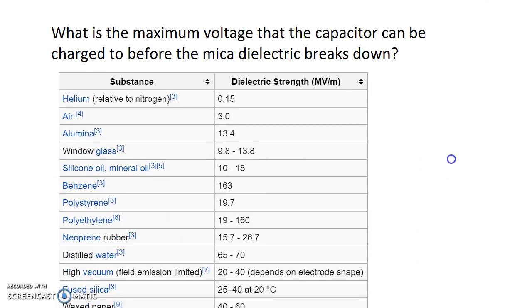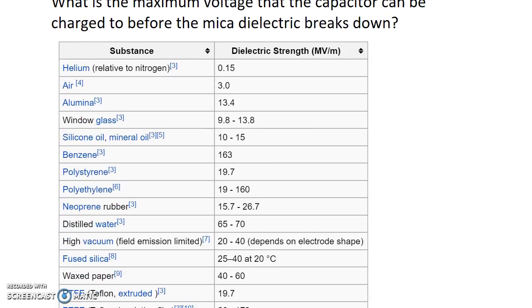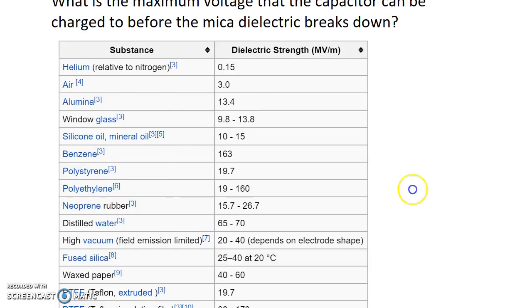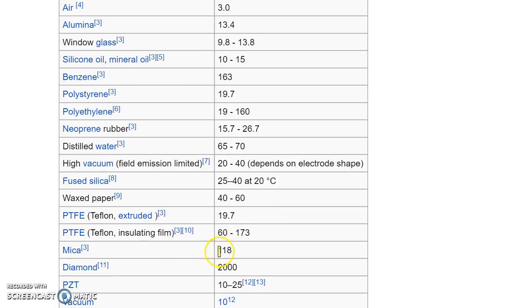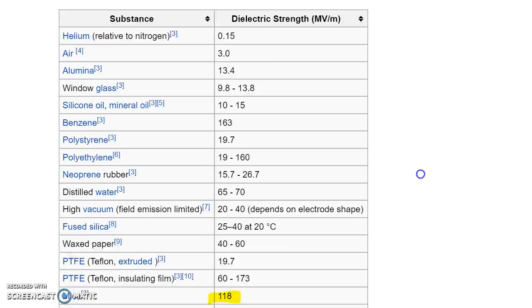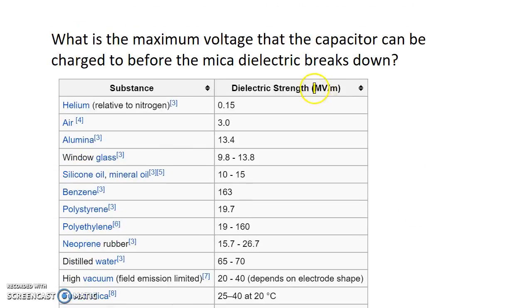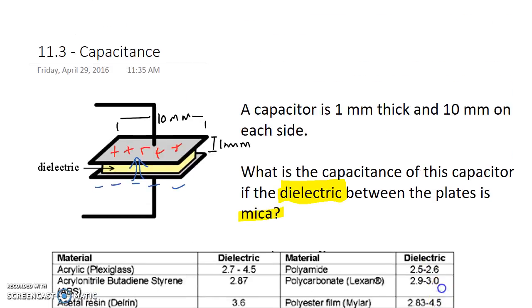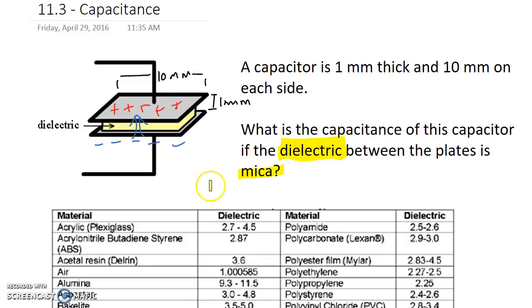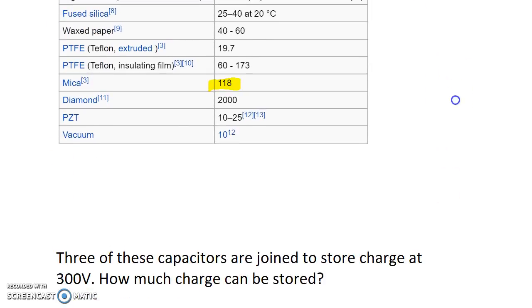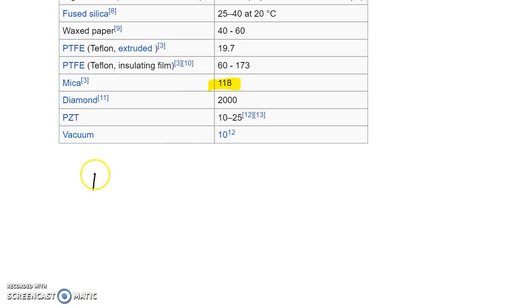The key here is in understanding the dielectric strength for mica. According to this source, it's 118 megavolts per meter. We are going to be setting up the voltage across one millimeter.